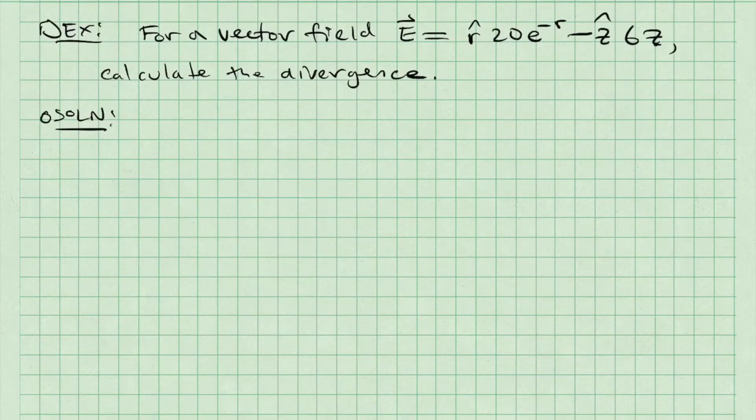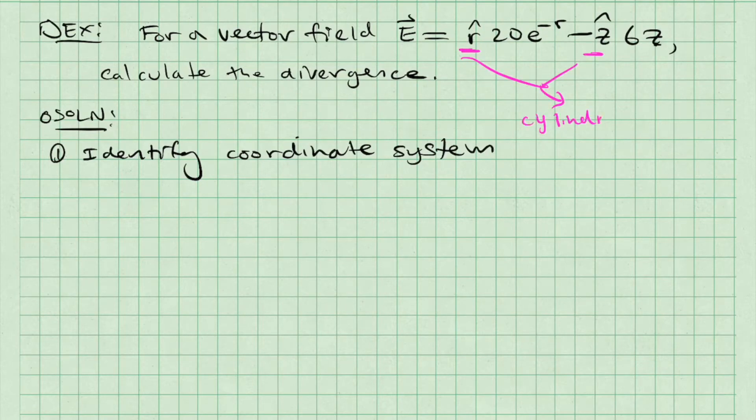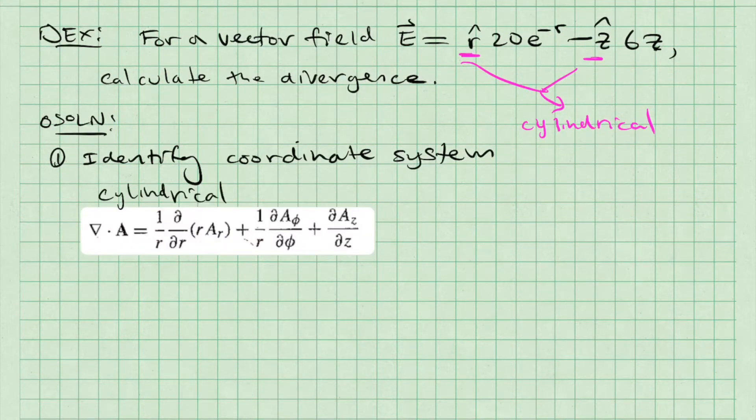Let's apply these equations to an example and establish a systematic routine for calculating the divergence. The first thing we will do is identify the coordinate system. Looking at the given vector field, the lowercase r hat and z hat are dead giveaways that we are working with cylindrical coordinates. The equation for the cylindrical coordinates is this one.